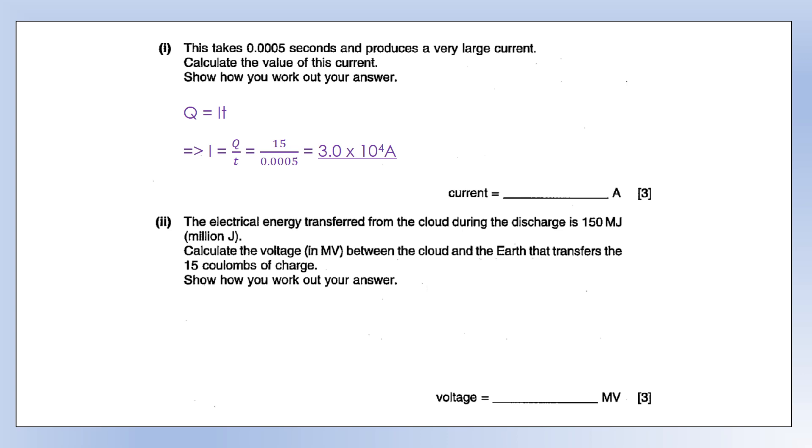The electrical energy transferred is 150 megajoules. Calculate the voltage in megavolts between the cloud and the earth that transfers 15 coulombs of charge. Remember that energy is current times potential difference times time. From the equation Q equals IT, we can see we can replace IT with Q. So we've got E equals QV. You can rearrange that to make V the subject, plug in the numbers, and we get 1 times 10 to the 7 volts, or just 10 megavolts overall.